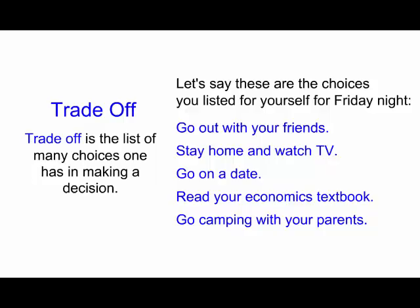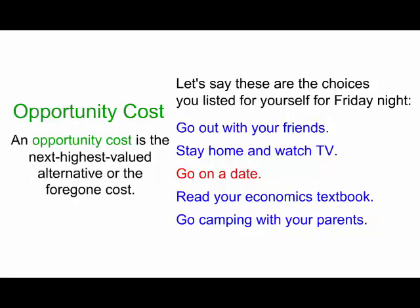Out of this list of five things you could be doing on a Friday night, you choose to go out on a date. If you choose to go out on a date, you're giving something up. What you're giving up is your opportunity cost — the next highest valued alternative, or the foregone cost. So if you go out on a date, what are you giving up? What's your next highest valued alternative?